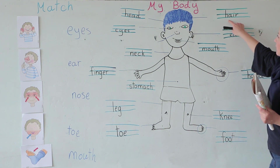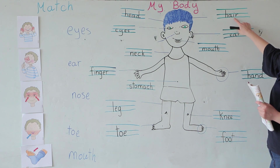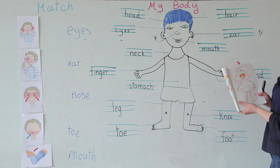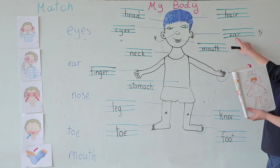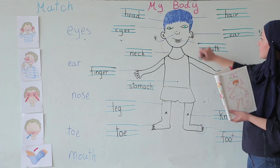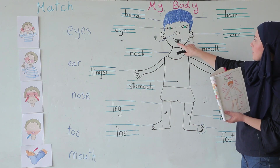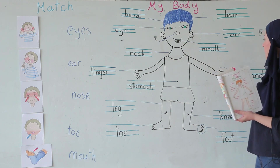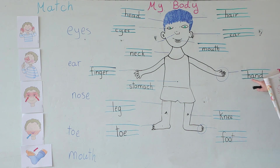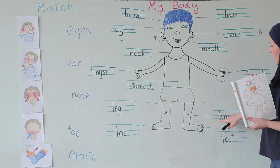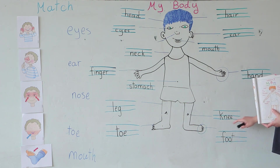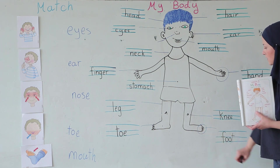Hair — H A I R. This is the hair. Ear — E A R. Mouth — M O U T H. Hand — H A N D. Knee — K N E E. This is the knee. Foot — F O O T.